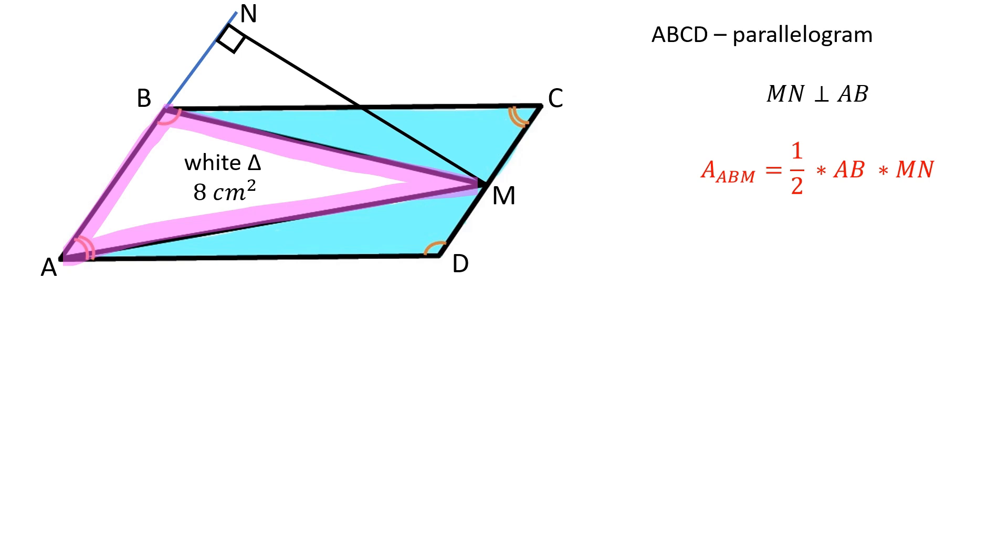Therefore, the area of the triangle ABM is equal to half the product of AB and MN.